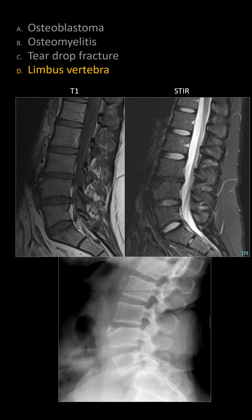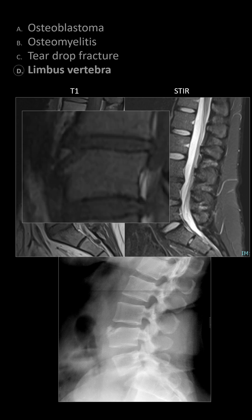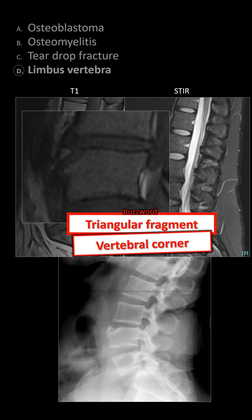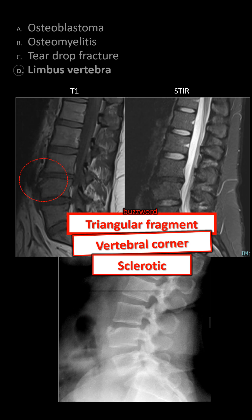Best answer: limbic vertebra. The key finding is a triangular bony fragment located at the corner of a vertebral body with a sclerotic margin. The bony fragment typically does not fit perfectly back into its original position, just like a puzzle piece that does not fit perfectly back into the puzzle.